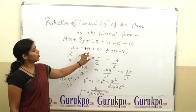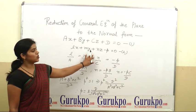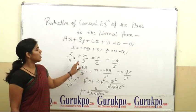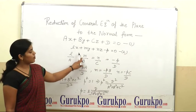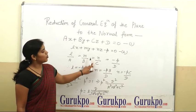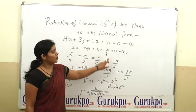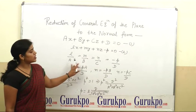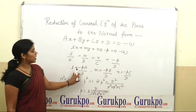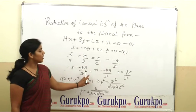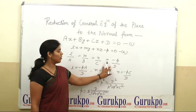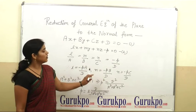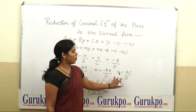Now, comparing the coefficients of x, y, z and P in equation first and second, we can write L upon A is equal to M upon B is equal to N upon C is equal to minus P upon D. Or we can write from the first and fourth ratio, L is equal to minus AP upon D, and from the second and fourth ratio, M is equal to minus BP upon D, and N is equal to minus CP upon D.